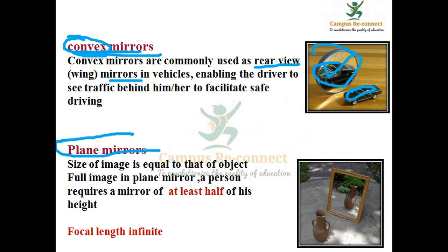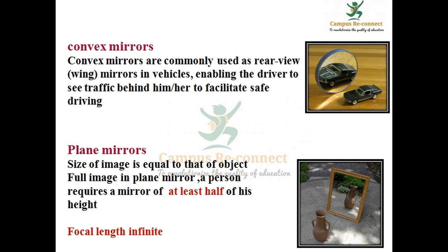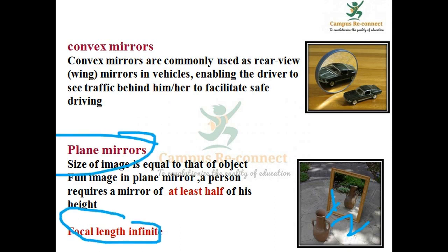Next is the plane mirror. Suppose you have an object and a plane mirror. The object forms a real image at 1 by 2 — it is half of the image size. The focal length is infinite. At least half of the focal length is to remember.